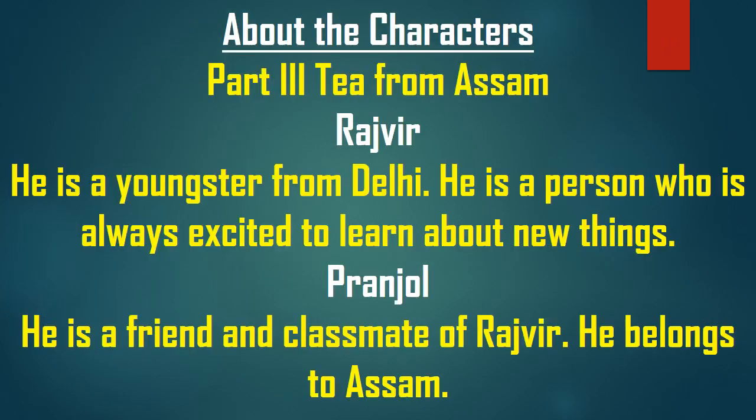About the characters: the third part, Tea from Assam, has mainly two characters — Rajveer and Pranjal. The story revolves around them. Rajveer is a youngster from Delhi who is always excited to learn about new things. Pranjal is a friend and classmate of Rajveer who belongs to Assam.